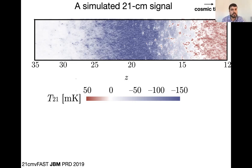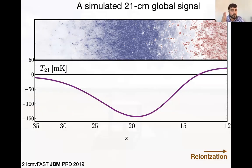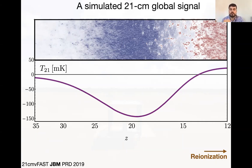The global signal is just the average across the simulation, but it follows the same logic: it starts at zero, slowly becomes negative, reaches a peak, and then becomes positive. By the end of the simulation it's above zero — emission instead of absorption. Later, as reionization occurs, all the hydrogen gets ionized, so this line will go to zero as hydrogen is slowly re-ionized.